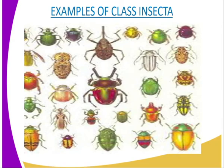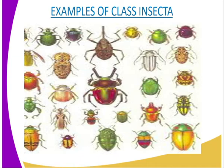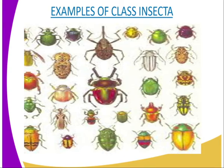The abdomen is made up of eleven or fewer segments with terminal parts modified for reproduction. What you should know about this class is that insects form half the population of animals on earth, so there are very many insects in this world. Insects undergo complete or incomplete metamorphosis — there are some which undergo complete and others undergo incomplete metamorphosis.